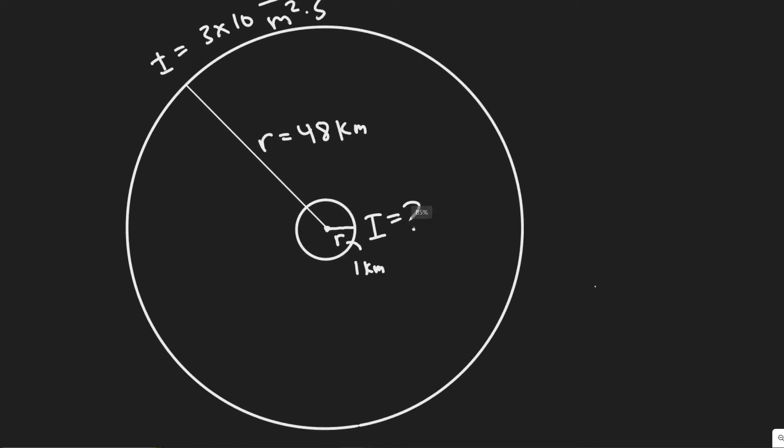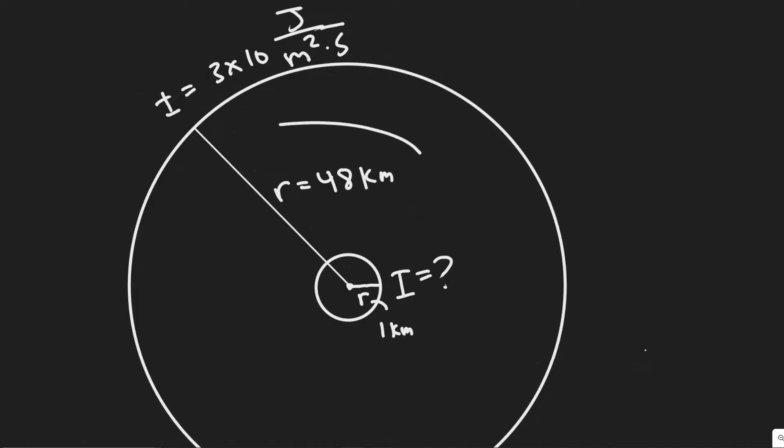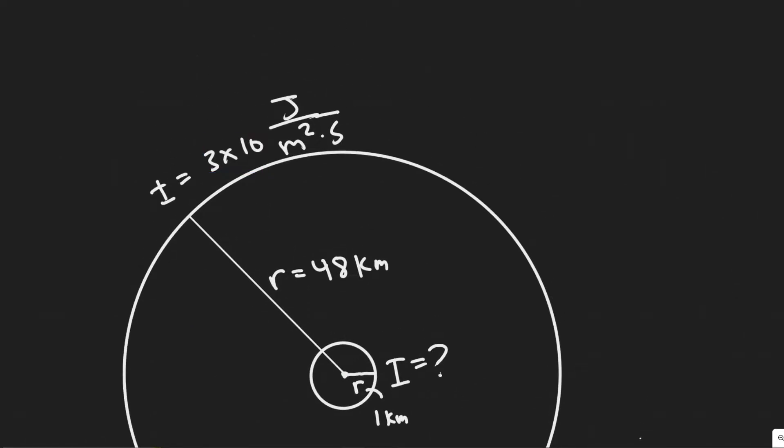So we have this earthquake here and we can imagine the epicenter to be right here in the center. And we know it's going to go out in a circle and travel outwards in all directions. And we're told 48 kilometers from the epicenter, the intensity is 3 times 10 to the 6 joules per meter squared times second.